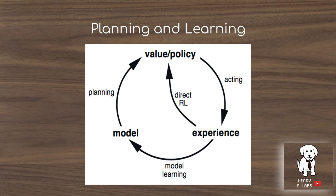This diagram shows how planning and learning are related — they are essentially the same thing, differing only in whether experience is derived from the actual environment or from a model. We have a value function estimating the values of states or state-action pairs, and our policy is made greedy with respect to that value or Q function. We then act in the environment and receive experience.